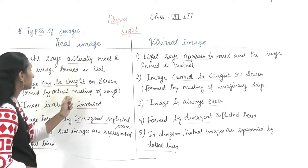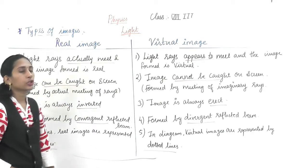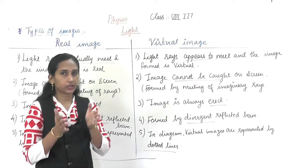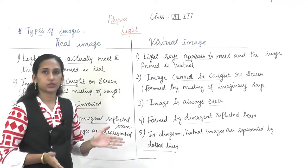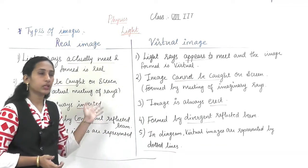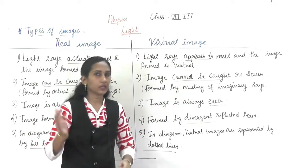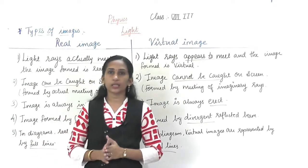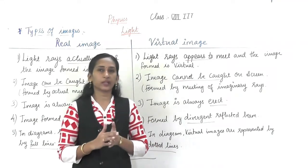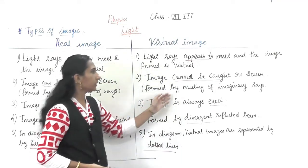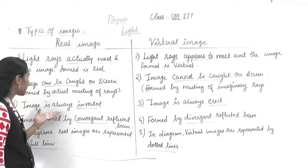A real image is caught on the screen because it is formed by the actual meeting of rays — when the rays actually meet at a point, the real image is formed. A virtual image, on the other hand, is formed by the meeting of imaginary rays. We extend imaginary lines to where they appear to meet, and the image is formed from those imaginary rays.